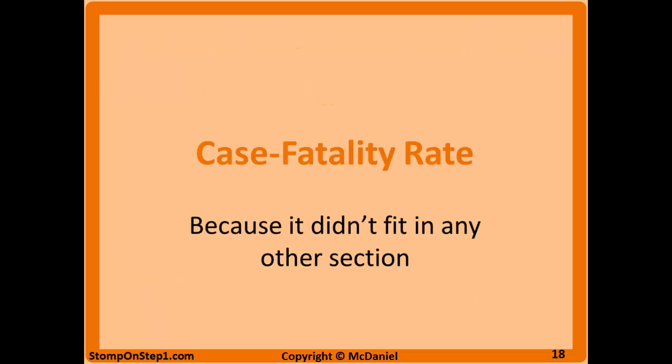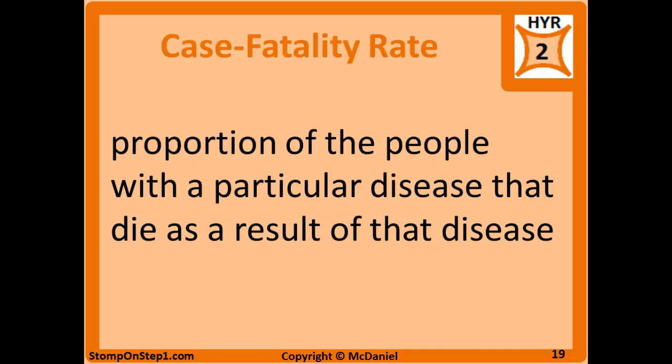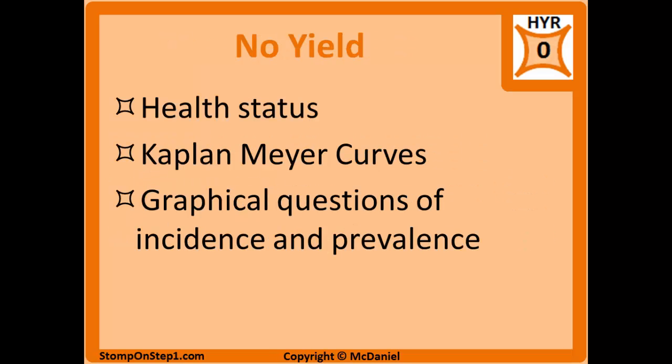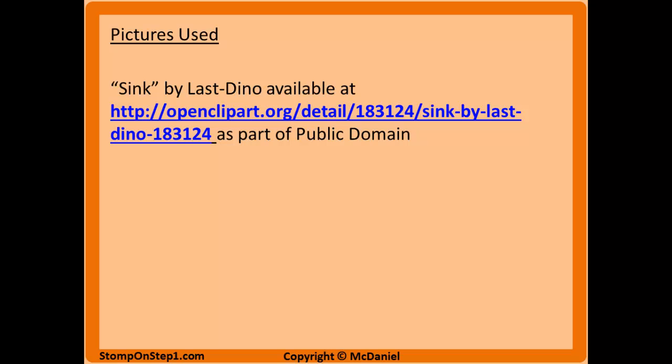I'm also going to cover case fatality rate here. Case fatality rate compares the total number of cases to the number of fatalities from whatever disease you're studying — it's the proportion of people with a particular disease who die as a result of it. For example, if there are 20 cases of a particular cancer at a hospital and five people died from it, the case fatality rate would be 5 over 20. Finally, there are some related items I don't cover in these videos because they're so low yield — I'd suggest only looking at those topics after you've mastered all the higher-yield material.